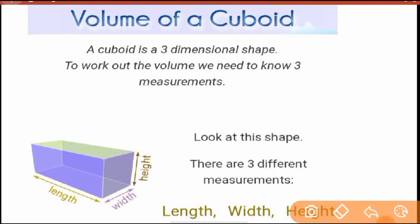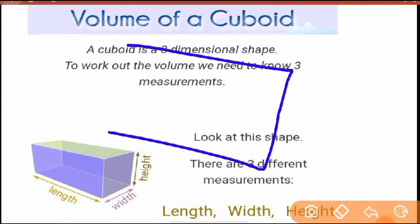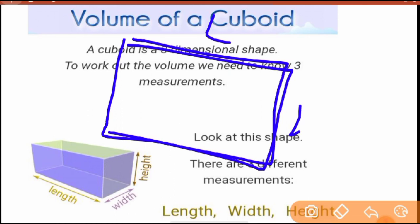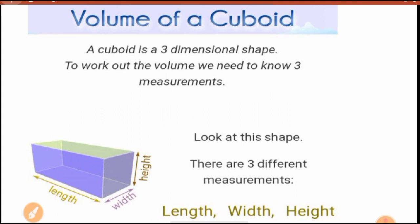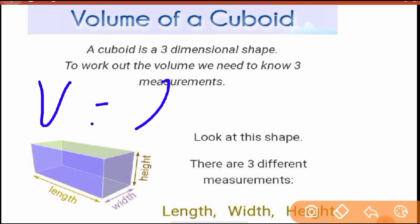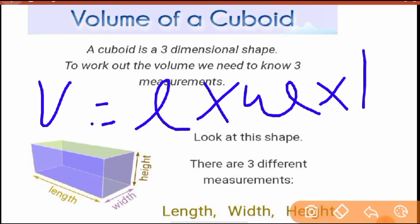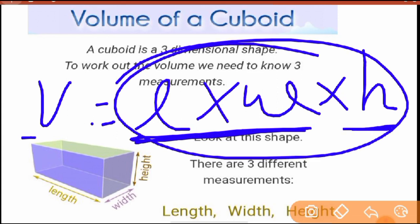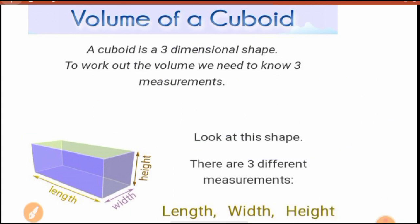In the case of surface area, like a rectangle, there was only length and width. But here there is one more dimension: height. So for area, the formula was area equals length into width. When a dimension is added, we multiply length into width into height — that is the volume formula.